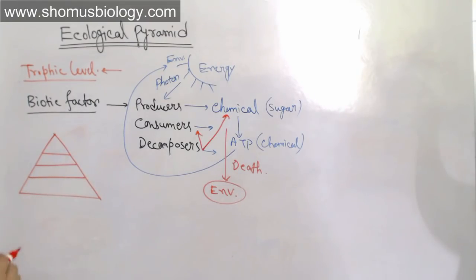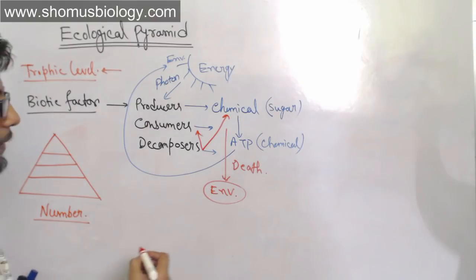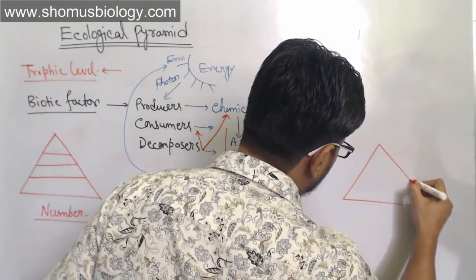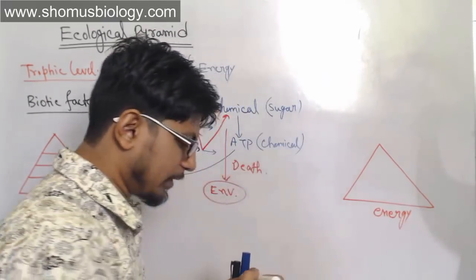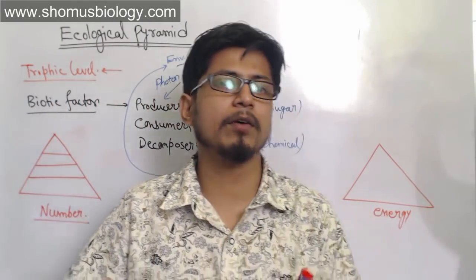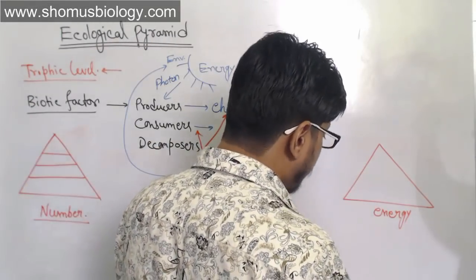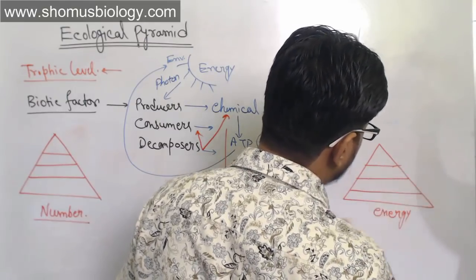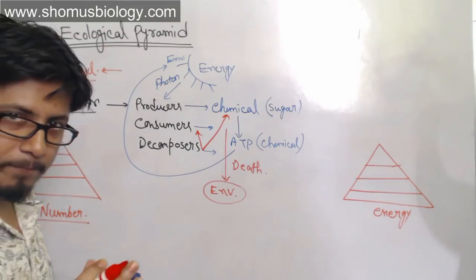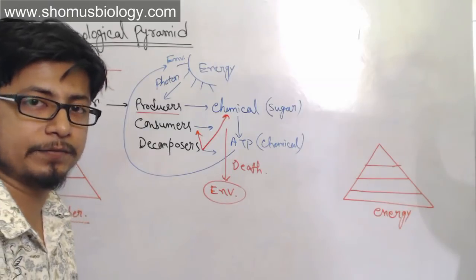There are three types of ecological pyramids commonly discussed: pyramid of number, pyramid of energy, and pyramid of biomass. Let's first talk about the pyramid of energy because it is the most important. The maximum energy throughout the ecosystem is received by producers, since they receive direct energy from the sun.